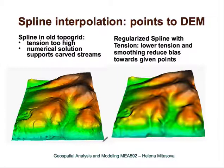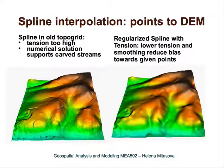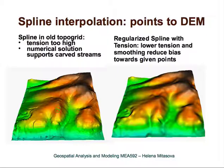Here we have two more examples of spline interpolation. This is the result with spline in old Topogrid in ArcGIS, where the default tension was set to high. You can see there is a little peak around each data point. What is nice about this tool is that the minimization is solved numerically and supports carved streams, so if you have stream data you can carve the streams into the DEM, which is useful for hydrologic applications.